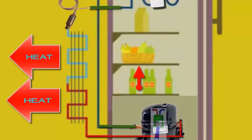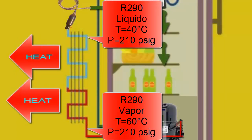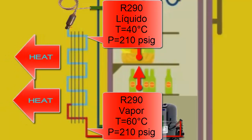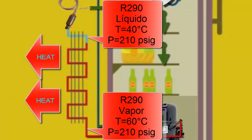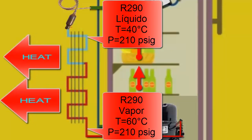As the R290 refrigerant loses heat in the condenser, it changes from a gaseous to a liquid state. The pressure of the R290 refrigerant in the condenser remains at 210 pounds per square inch, but the R290 significantly decreases its temperature.